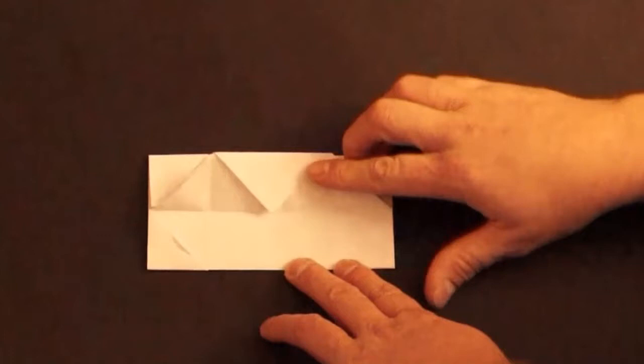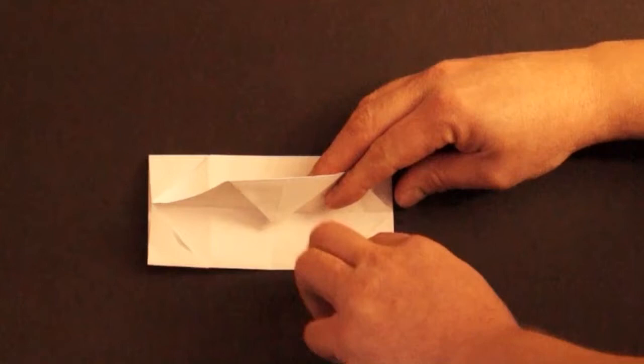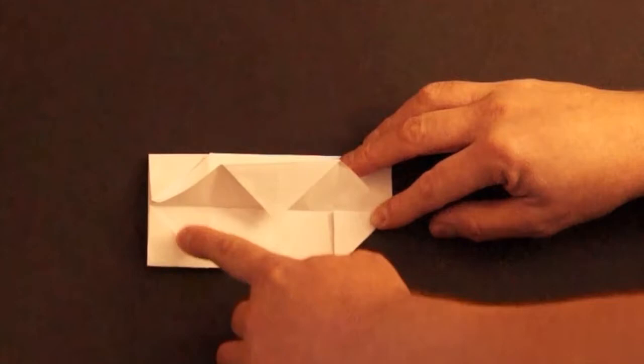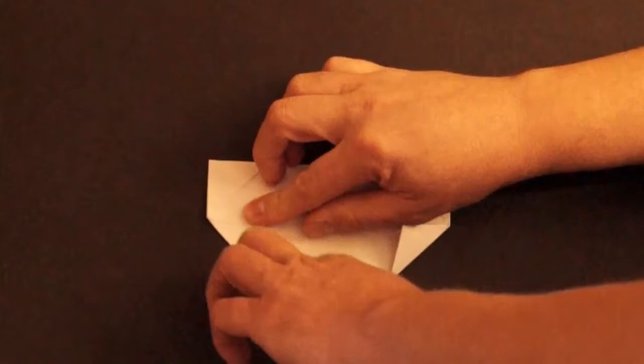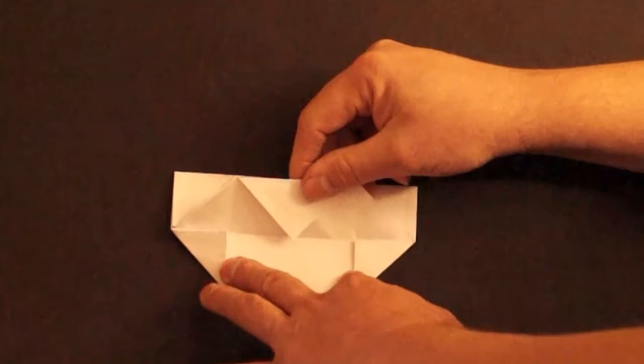The bottom, lift up this flap and fold the corner over on the edge that you see right here. Do the same thing on the other side, fold the corner over on that edge. They also line up on the crease right across here. Fold the flap back down.